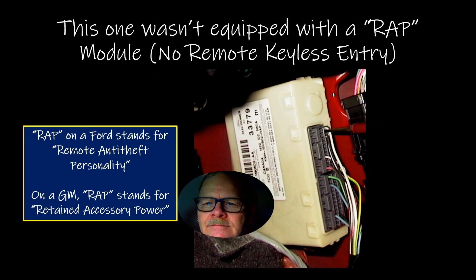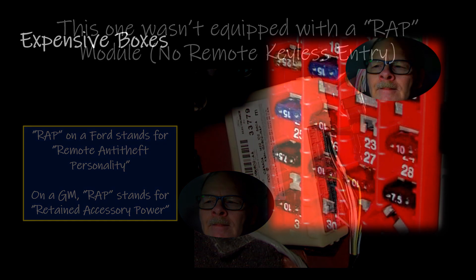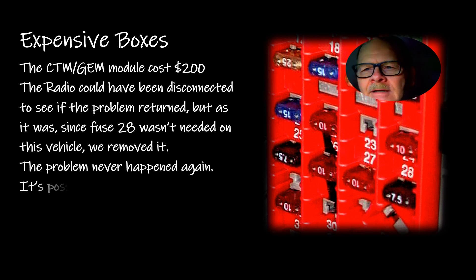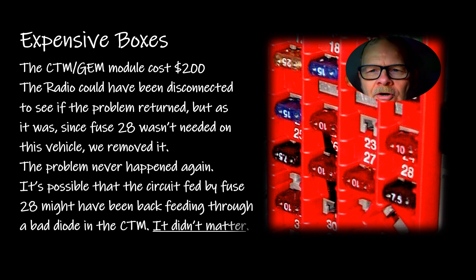This one was not equipped with a remote anti-theft personality module. On a GM, by the way, the RAP module stands for retained accessory power, which is how it keeps the radio on and the windows working when you switch off the key for a little while. This box was $200. The radio could have been disconnected to see if the problem returned, but since fuse 28 wasn't needed on this vehicle, we removed it. The problem never happened again. It's possible the circuit fed by fuse 28 might have been feeding back through a bad diode in the CTM, but it didn't matter.